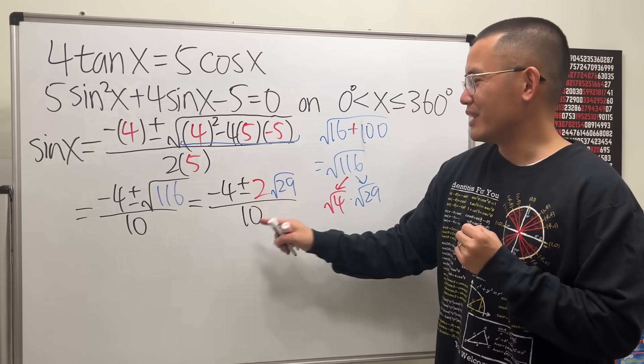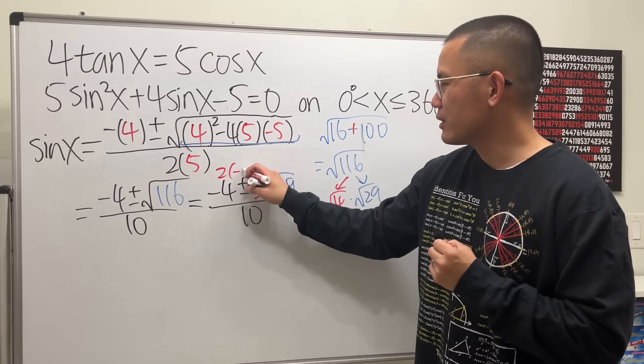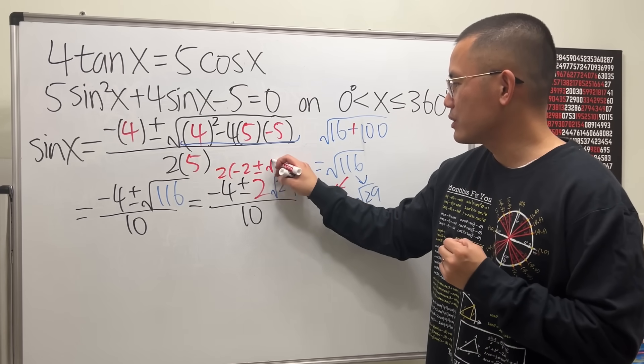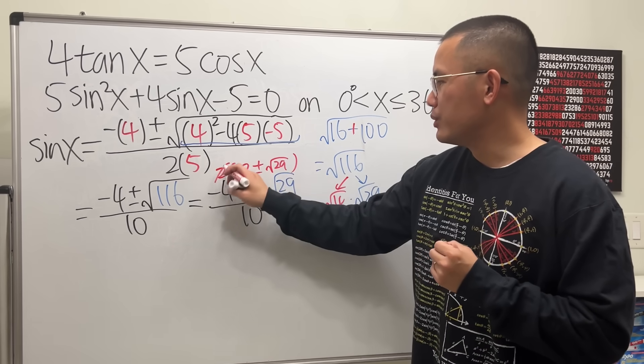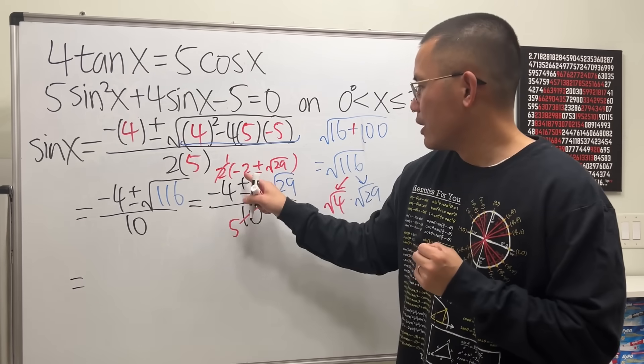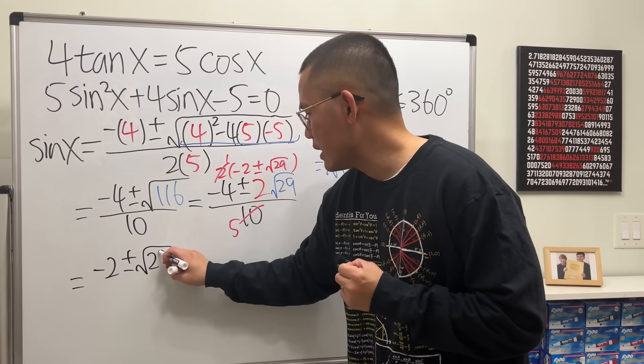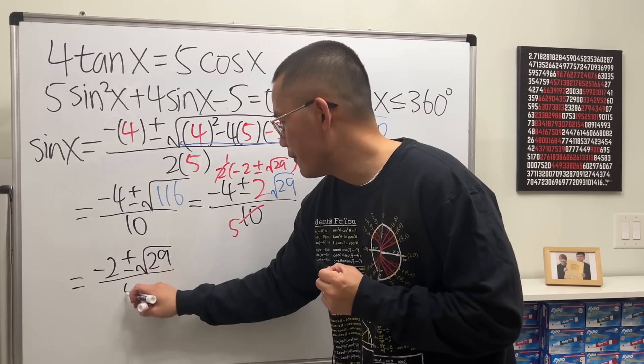Now we have 4, 2, and 10. We can reduce this a little bit. I'm going to factor out 2 first. So that's negative 2 plus or minus square root of 29. Reduce this. So we just have negative 2 plus or minus square root of 29 over 5.